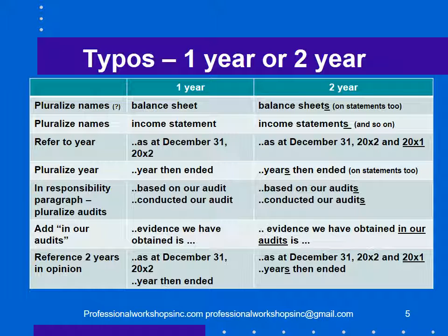You will of course refer to the year: in a one-year opinion, 'as at December 31st X2,' and in a two-year opinion, 'as at December 31st X2 and X1.' You then pluralize: 'for the year then ended' becomes 'for the years then ended.' In the responsibility paragraph, you have no choice — you must say 'based on our audits' plural, because we've had two audits: this year and last year. And 'we conducted our audit' becomes 'we conducted our audits.' Auditors who had not put an s on the balance sheet all put s's there.